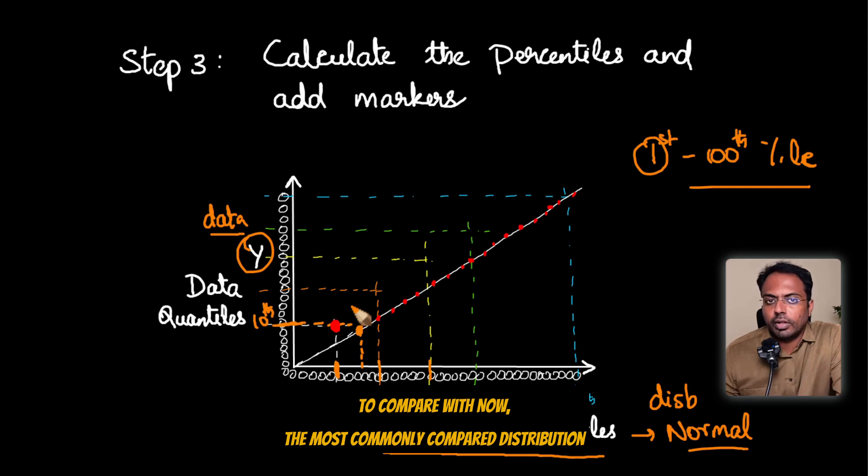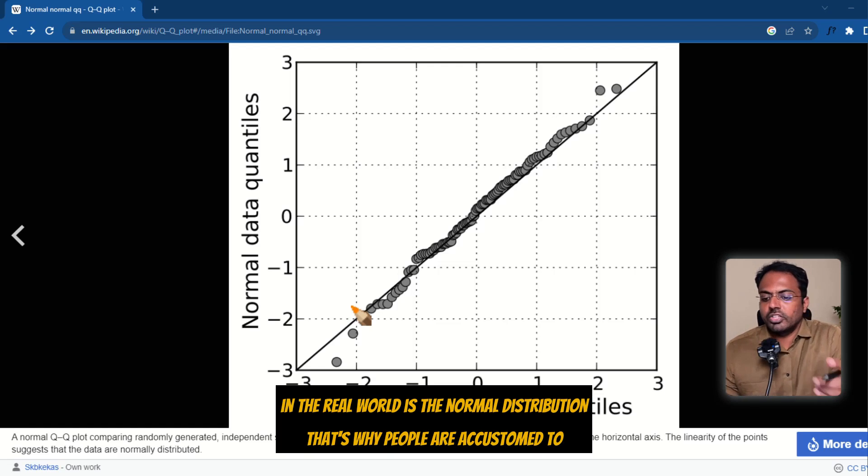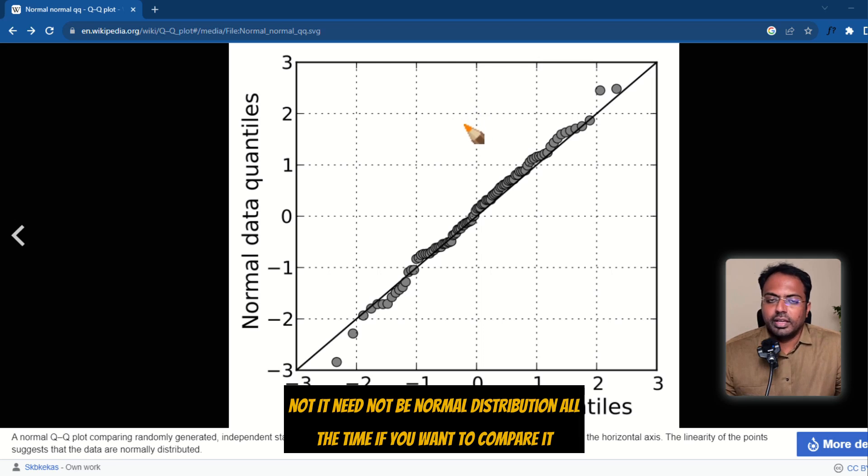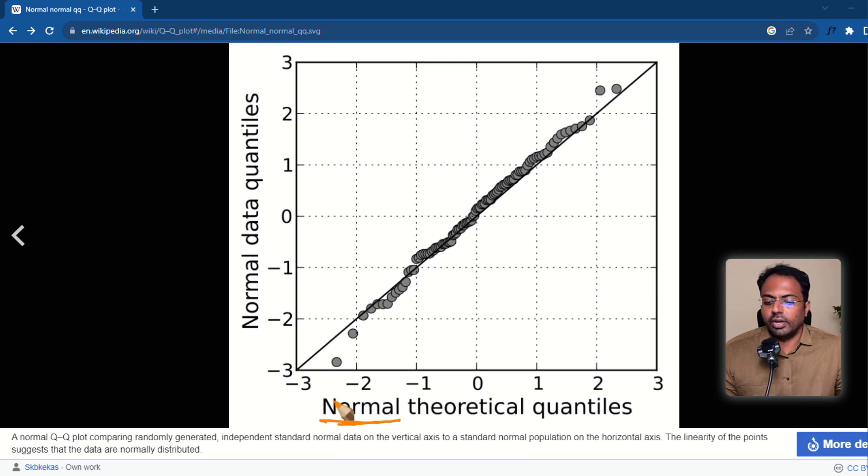Now, the most commonly compared distribution in the real world is the normal distribution. That's why people are accustomed to associate the QQ plot to checking if a given data is following a normal distribution or not. It need not be normal distribution all the time. If you want to compare it to a Poisson distribution, you can write it as Poisson theoretical quantiles. So that's how we interpret QQ plots.